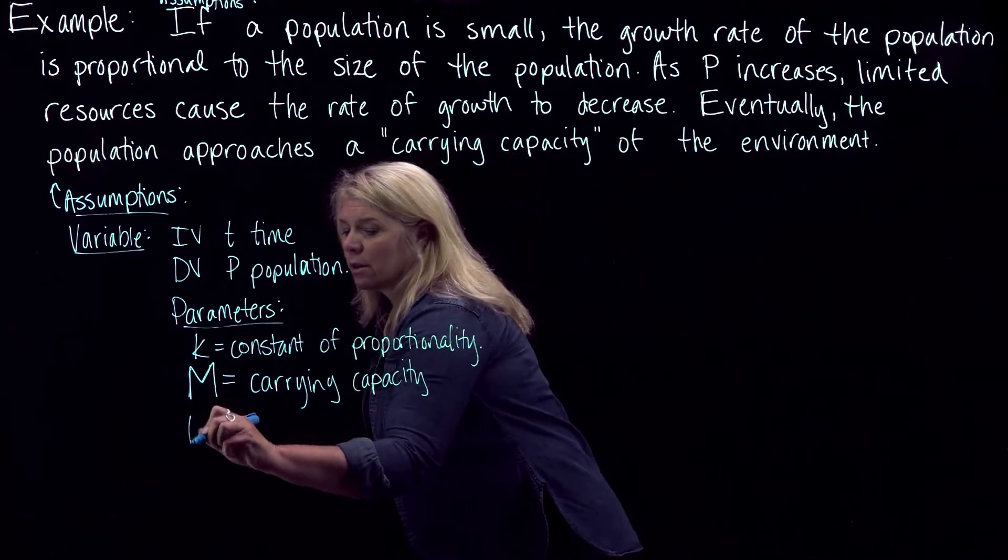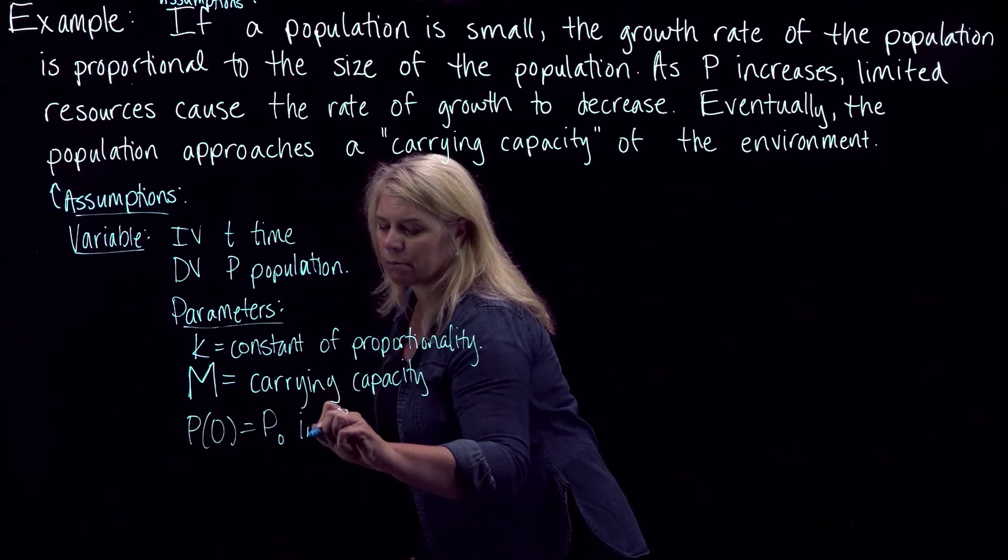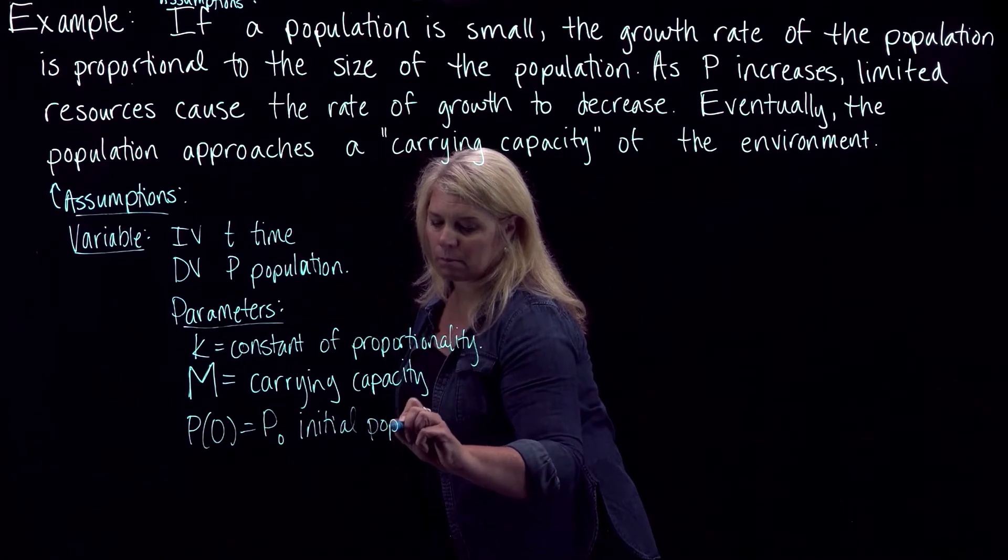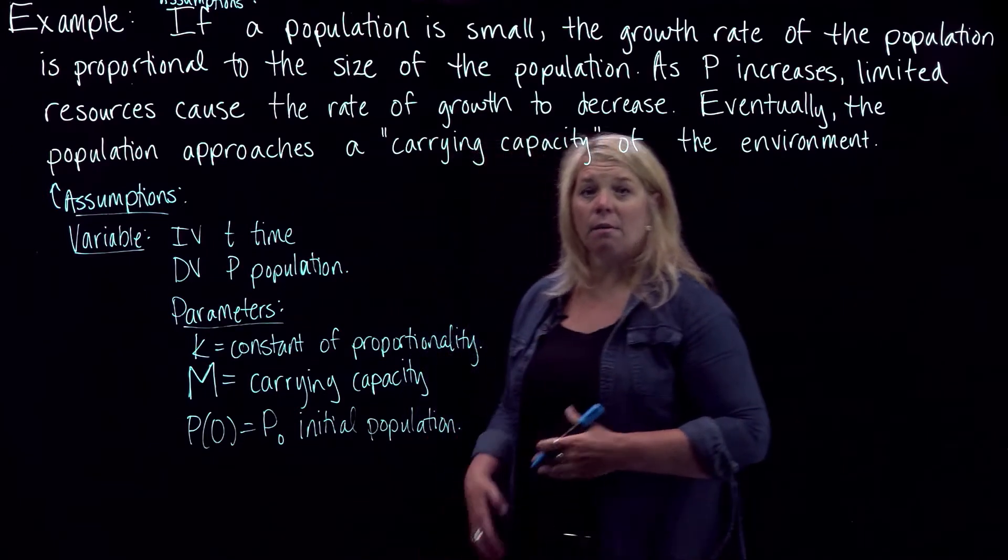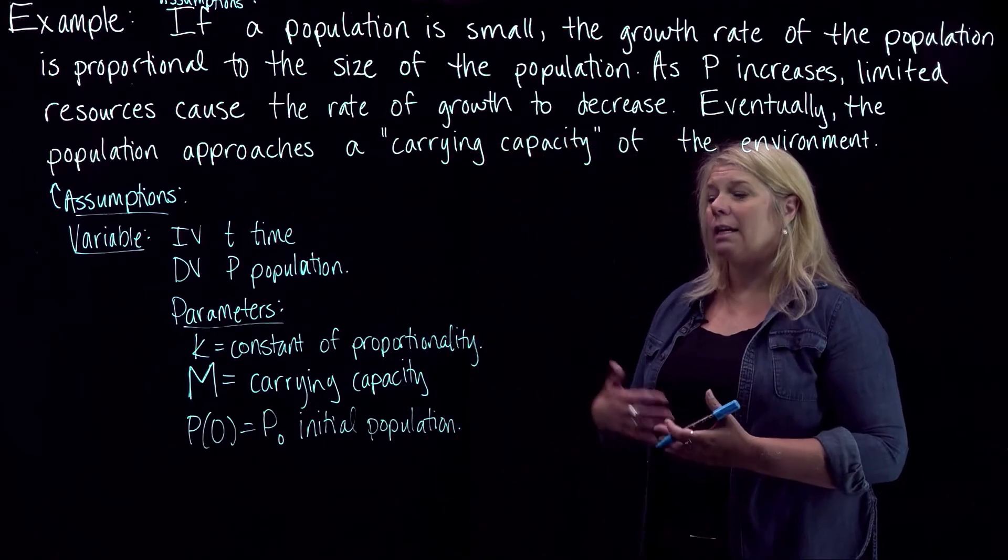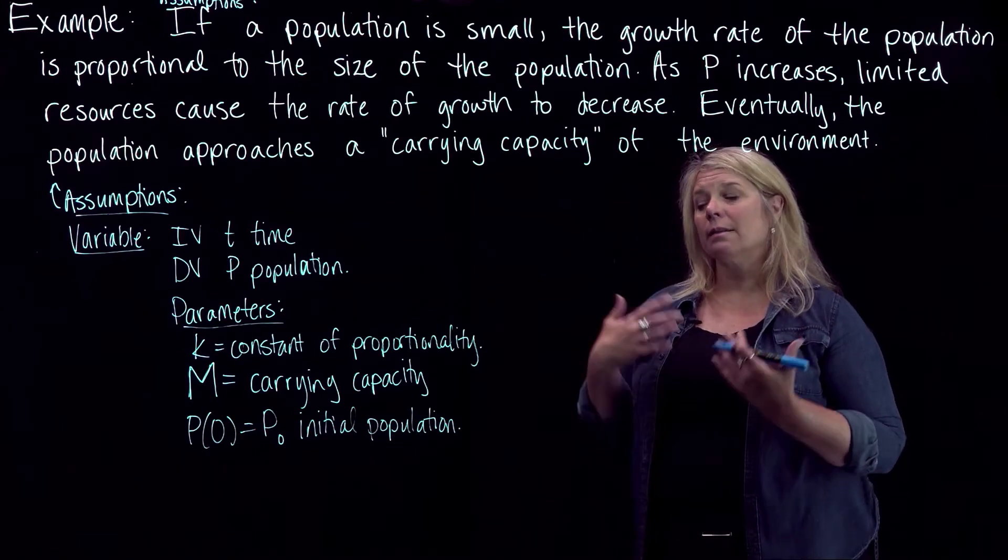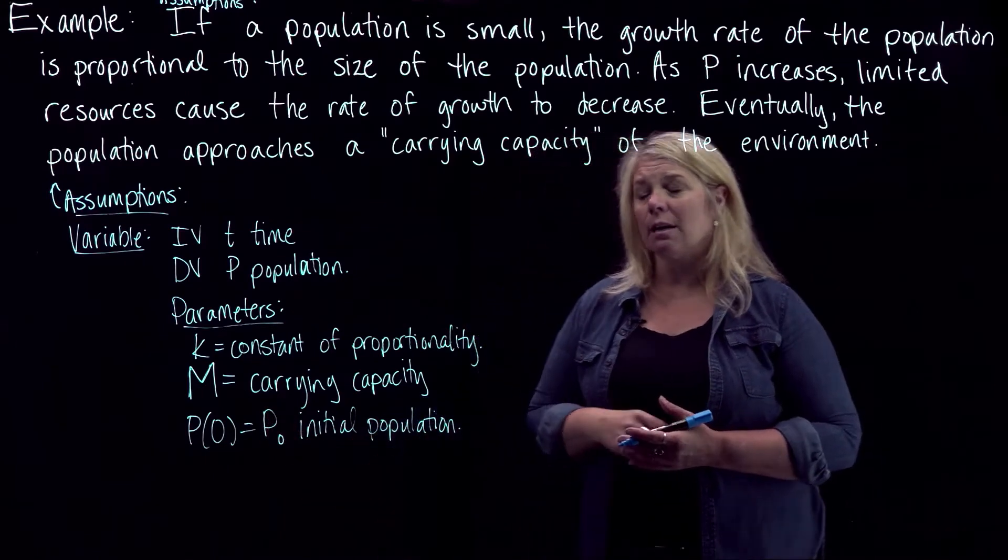And then we also are going to have at least some assumed initial population. To make sure that our model is actually reflecting reality, we would hopefully have some other data points too, some measurements taken at other points where we have other times and populations known that we could use to establish some of these constants.